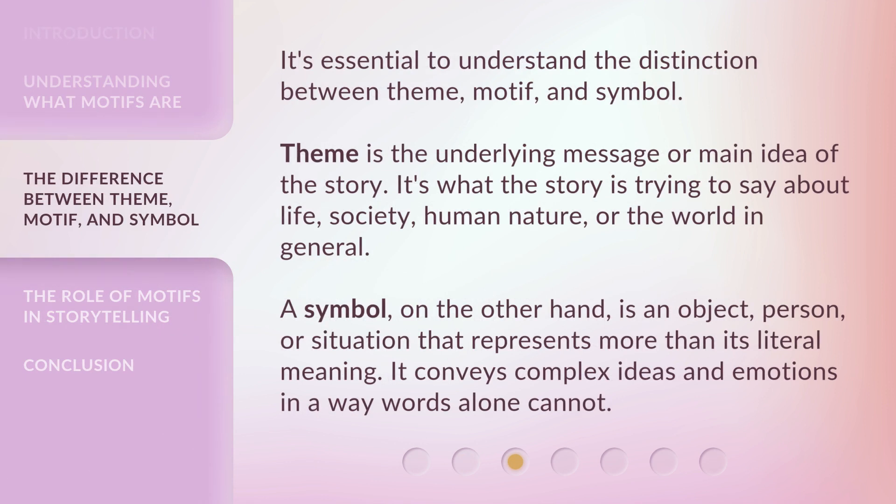It's essential to understand the distinction between theme, motif, and symbol. Theme is the underlying message or main idea of the story — what the story is trying to say about life, society, human nature, or the world in general. A symbol, on the other hand, is an object, person, or situation that represents more than its literal meaning, conveying complex ideas and emotions in a way words alone cannot.